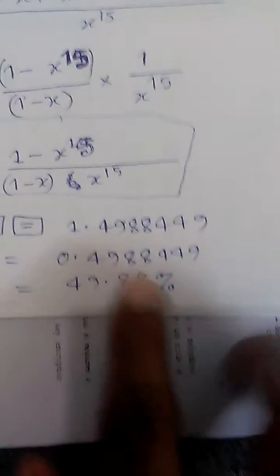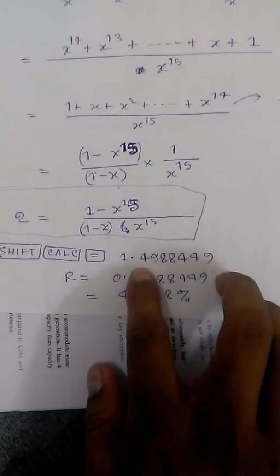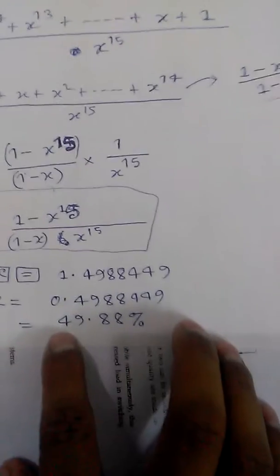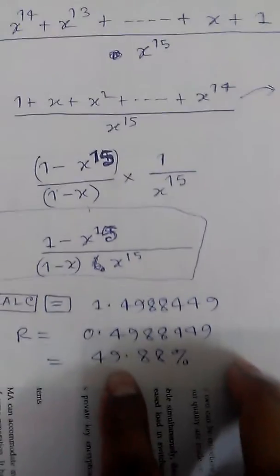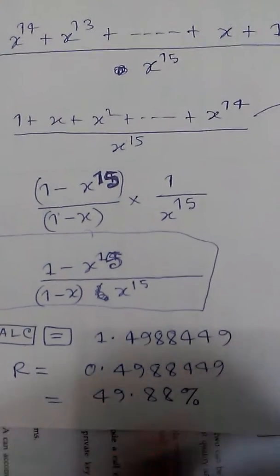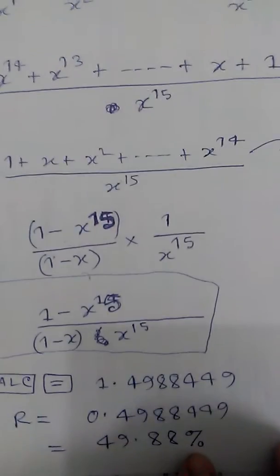We have put the solution X equal to 1.49 over here and found the solution R as well as X minus 1, that is 0.49. You have to show the result in percentage. That's why this is just multiply by 100%, and you will find 49.88%. Okay, so this is the...